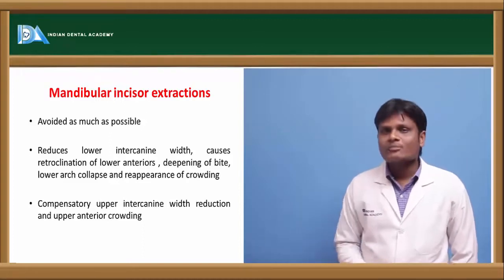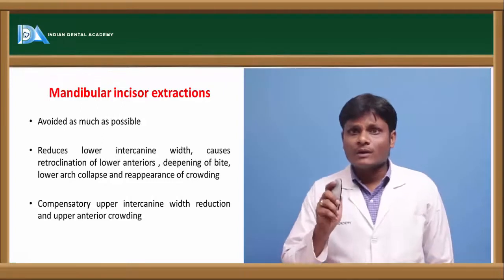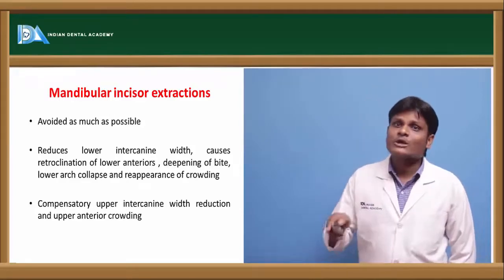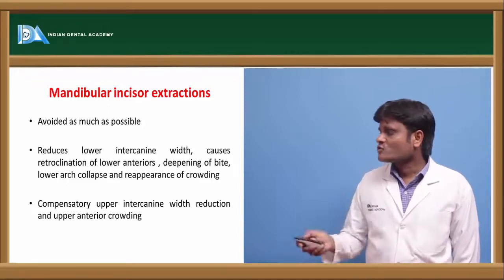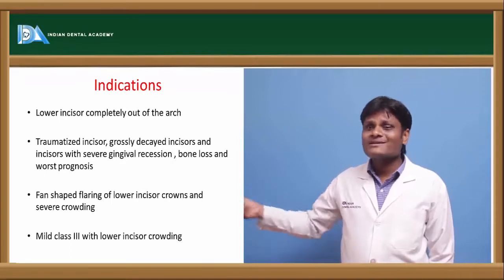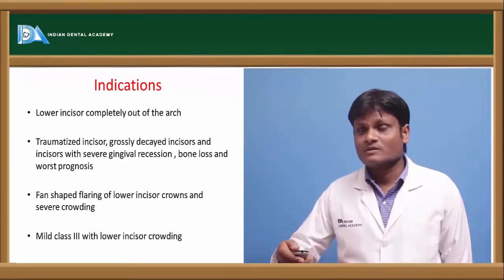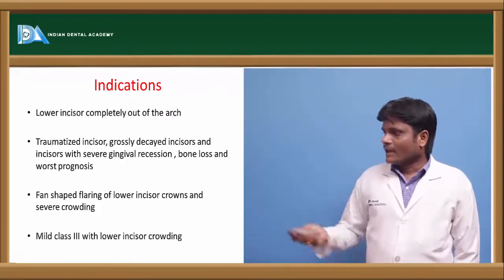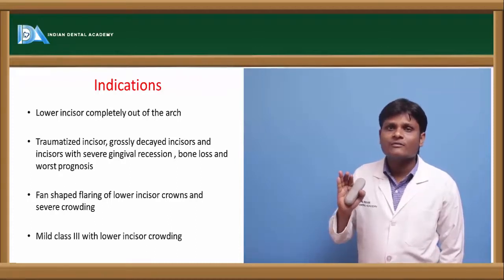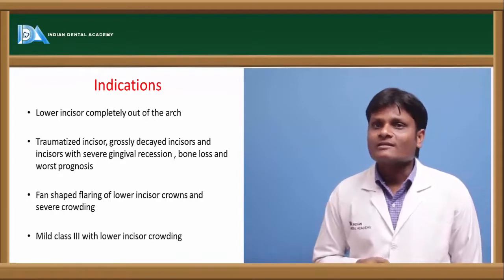To go for mandibular incisor extraction, a patient should have a good profile without much prognathism, with severe lower anterior crowding for which the space required is not more than the width of a mandibular incisor. The incisor that is extracted should be completely out of the arch, or may have been a traumatized incisor, or have severe gingival recession and severe periodontal involvement with poor prognosis. In some cases, mandibular incisors are flaring in the form of a fan shape — in such arrangement we go for extraction of a single incisor to correct the axial inclination of the mandibular anteriors. In cases of mild Class 3 with lower incisor crowding, we go for extraction of mandibular incisor to relieve the crowding.